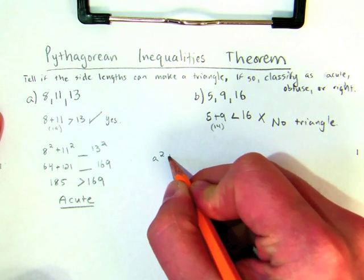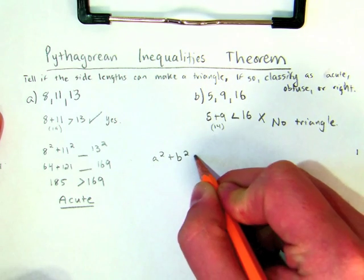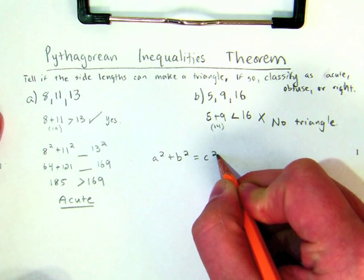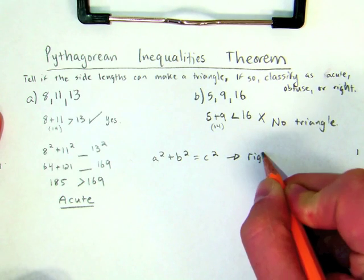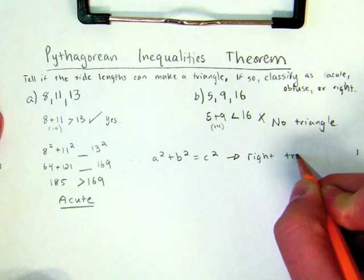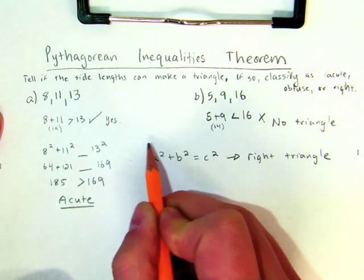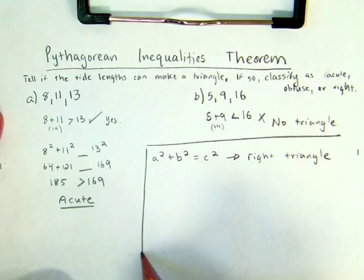If a squared plus b squared equals c squared, then I know that's going to give me a right triangle. Right? That is my Pythagorean theorem.